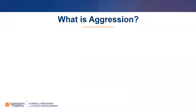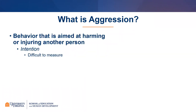Since the talk today is on aggression, I thought it would be important to start with some definitions of that term itself. When people use the word aggression, it can mean a lot of different things. You could say a salesman was aggressive in pitching products, or describe your partner's driving style as overly aggressive, or a basketball team with an aggressive style of defense. But for today's talk, we're going to focus on a much narrower definition: a behavior aimed at harming or injuring another person.